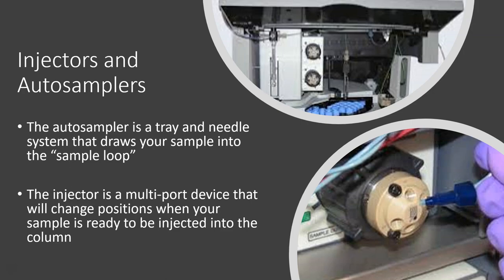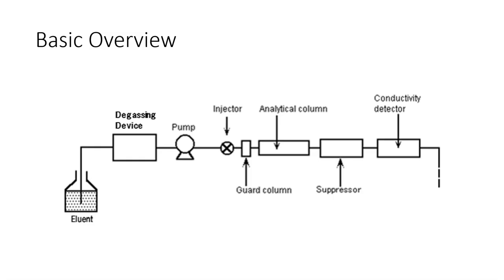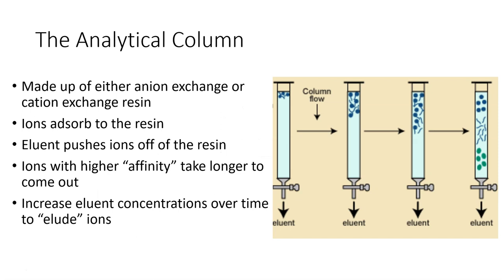So now that your sample has been drawn into the auto sampler and injected by the injector, it'll pass through a guard column which takes out any nasty things you don't want like hydrophobic organics or heavy metals, and then the sample goes into the analytical column.